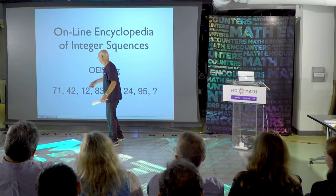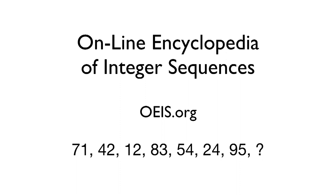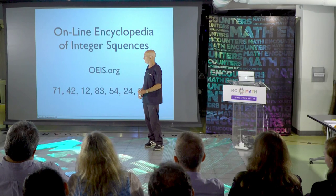So I just put a random example here: 71, 42, 12, 83, 54, 24, 95. You can probably all immediately guess what that is. It's a very simple sequence. So that's the kind of thing.